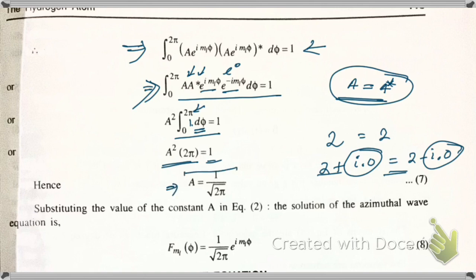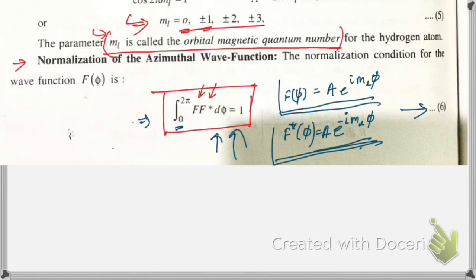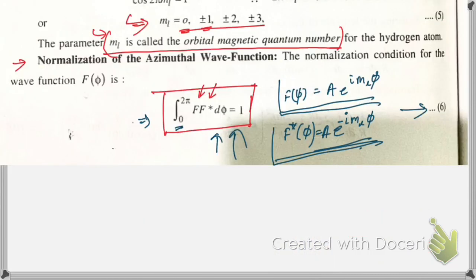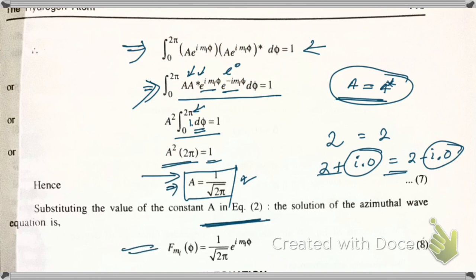From A²·2π = 1, we get A = 1/√(2π). Substituting this value of A back into equation number one, we obtain the normalized eigenfunction F(φ) = (1/√(2π))·e^(i·ml·φ). This is the required solution.